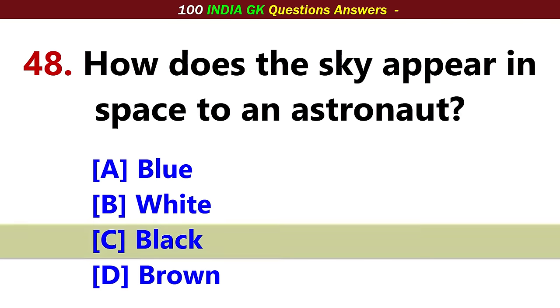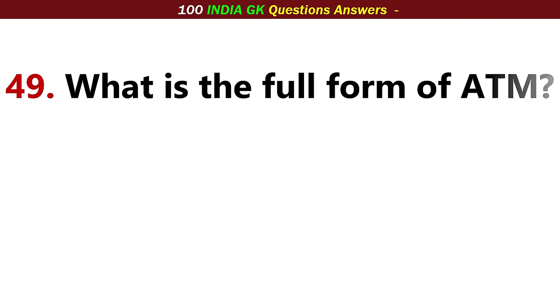How does the sky appear in space to an astronaut? Answer, Option C: Black.